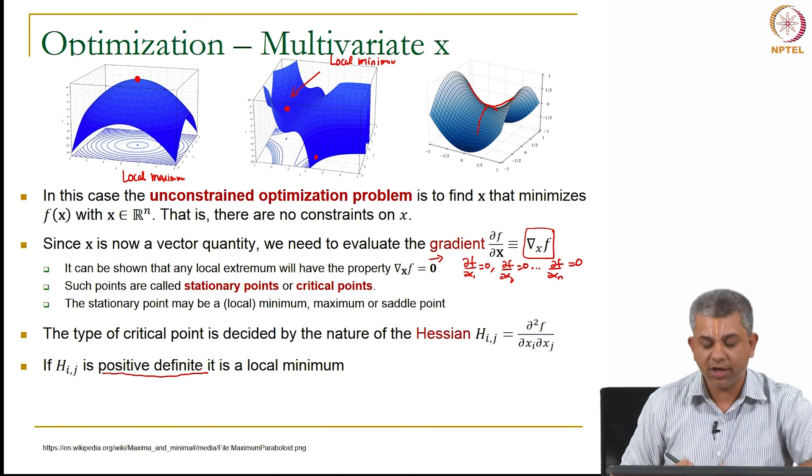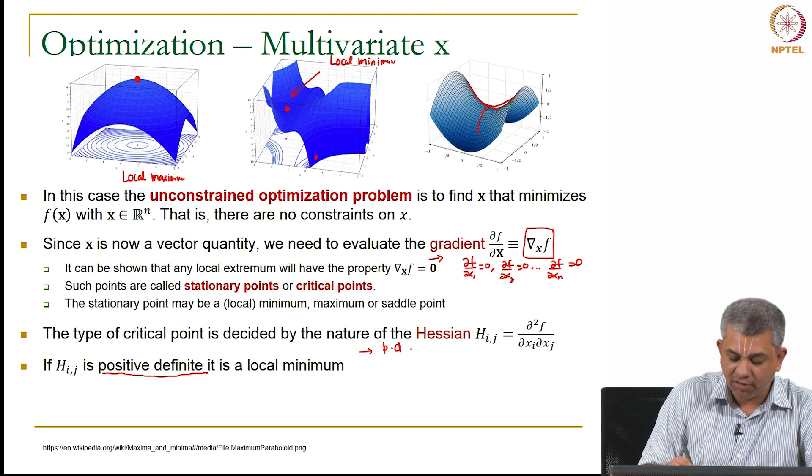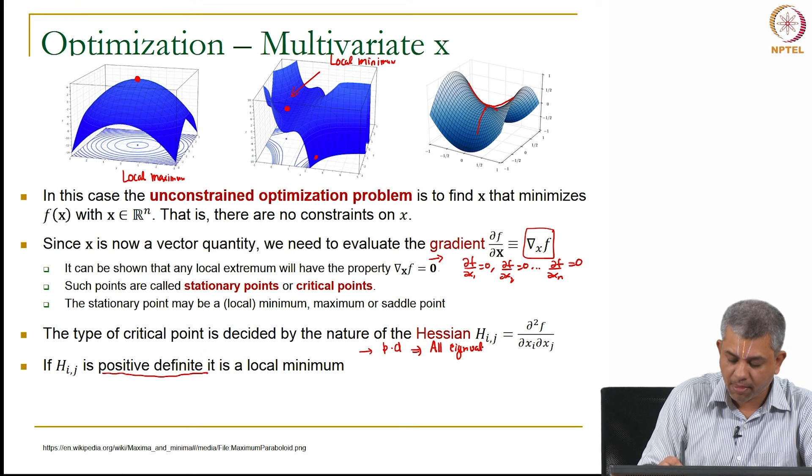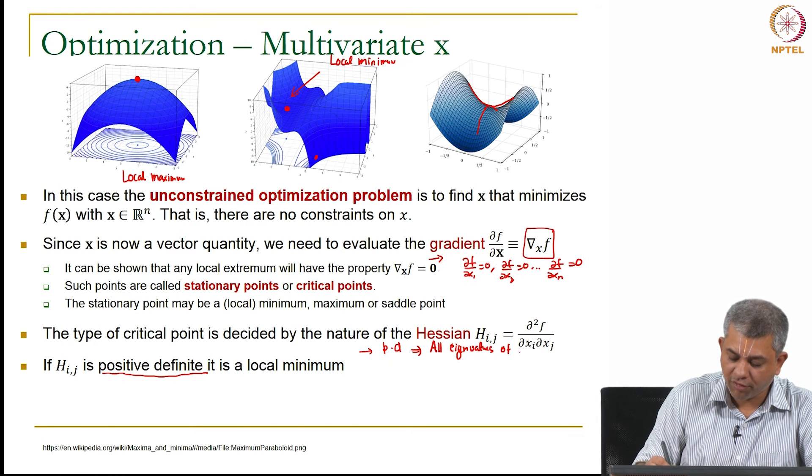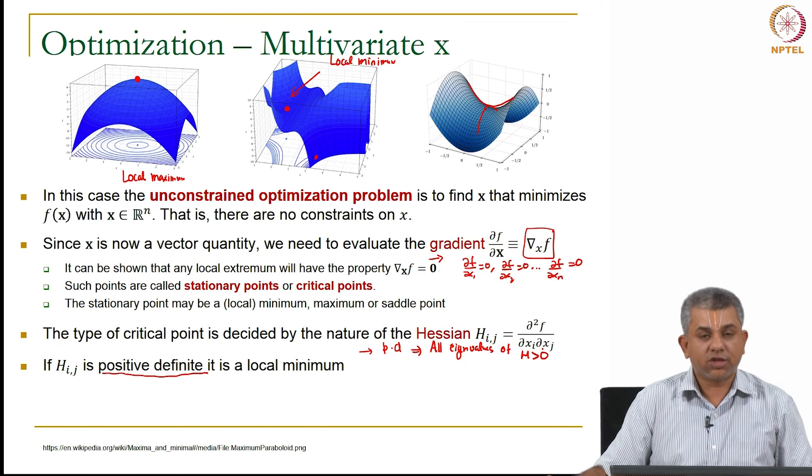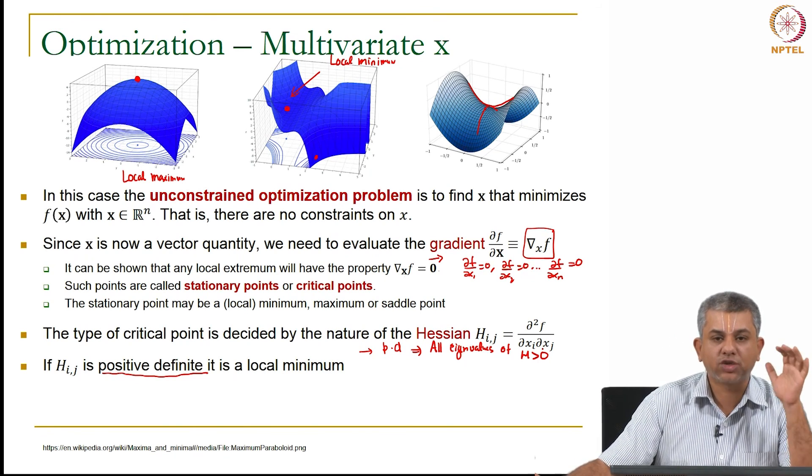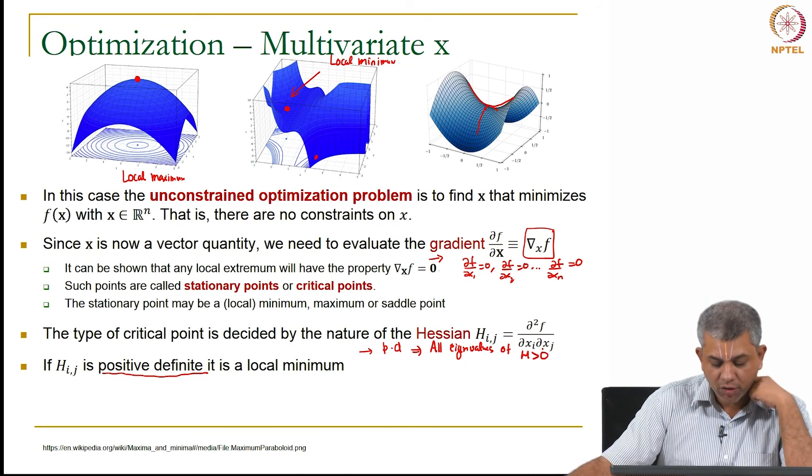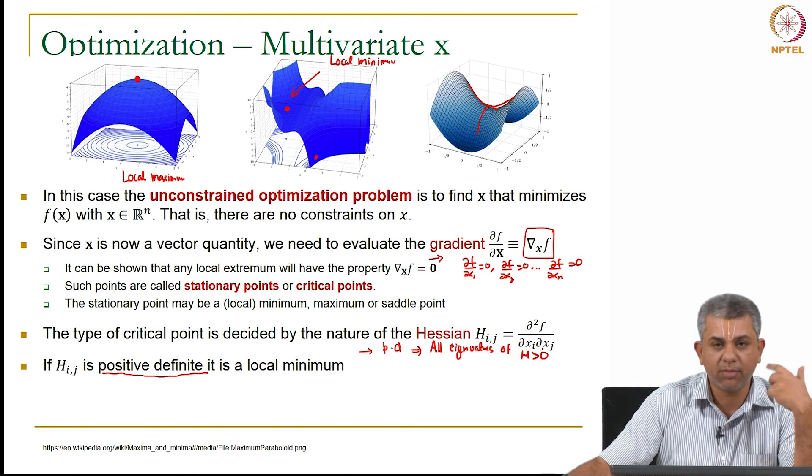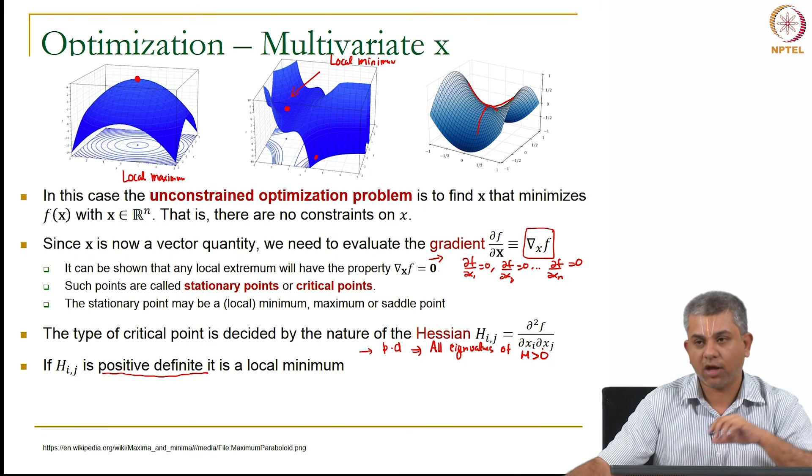So when Hessian is positive definite, you might remember this from the linear algebra slides. What does positive definite mean? Positive definite means all eigenvalues of H are positive. So this is not even positive semi-definite, you have to have all values of H being actually positive. So if that is the case, and remember since the Hessian was a symmetric matrix, we are guaranteed to have real eigenvalues so that you can talk about this meaningfully.